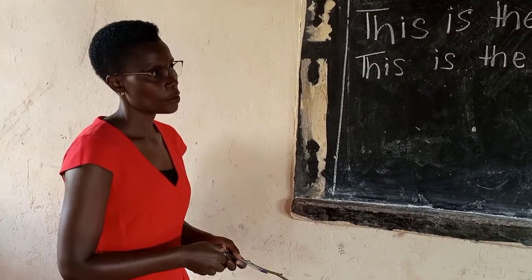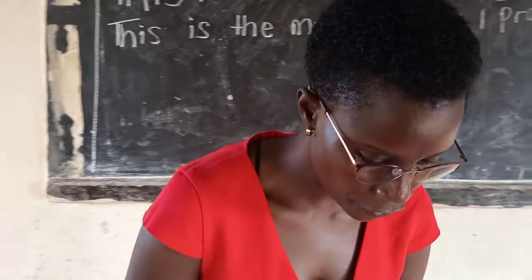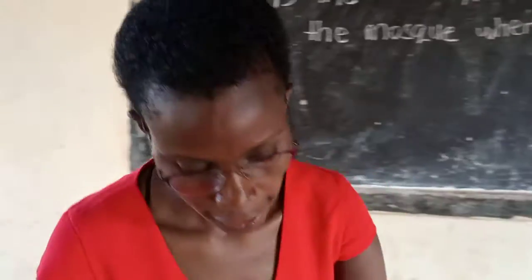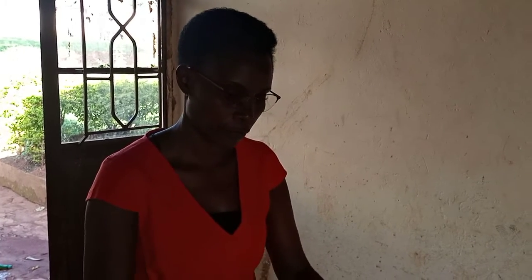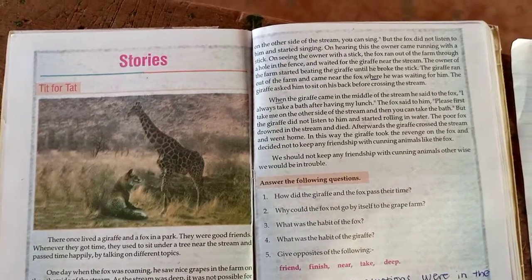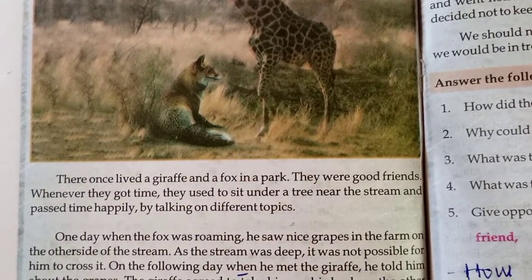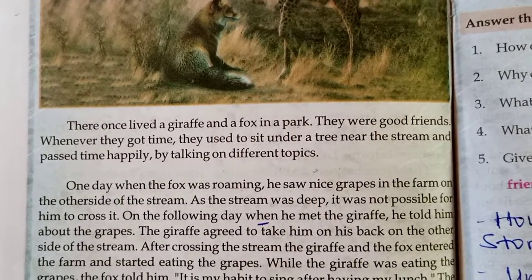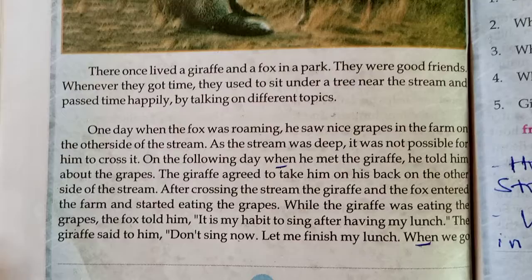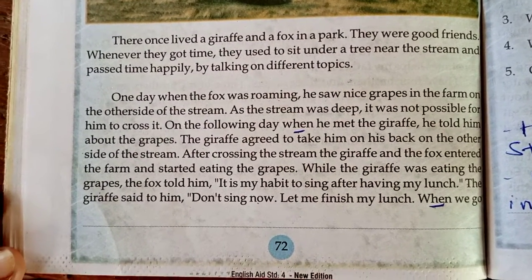And we have a very short story that I want us to share and find out the conjunctions that will be in that story. The story is about "Tit for Tat." There once lived a giraffe and a fox in a park. They were good friends. Whenever they got time, they used to sit under a tree near the stream and pass time happily by talking on different topics.